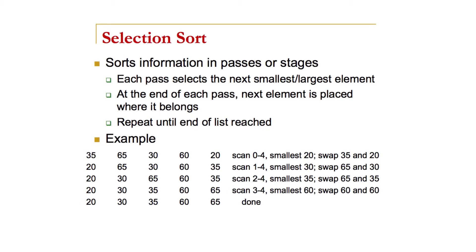So I remember where I started — index location 1 with 35 — and I swap out 35 and 20. In the second row you can see that 20 is in its proper place as the lowest number in the list, and 35 is now at the end. In the second row we start with 65, the second item, and find the second smallest number, which is 30. In the third row, after the third pass, we find the third smallest number, which is 35.